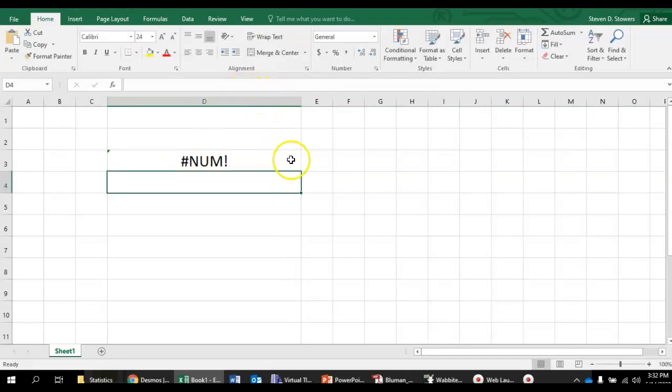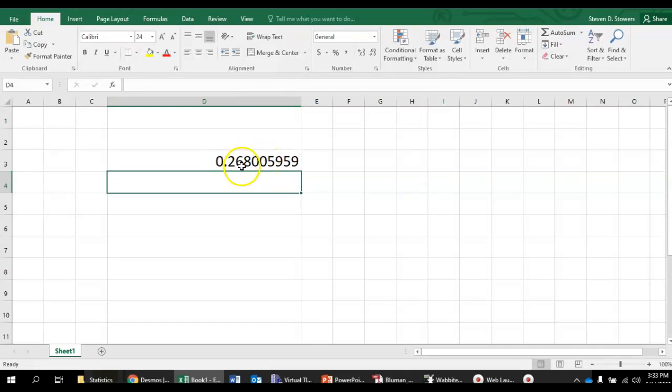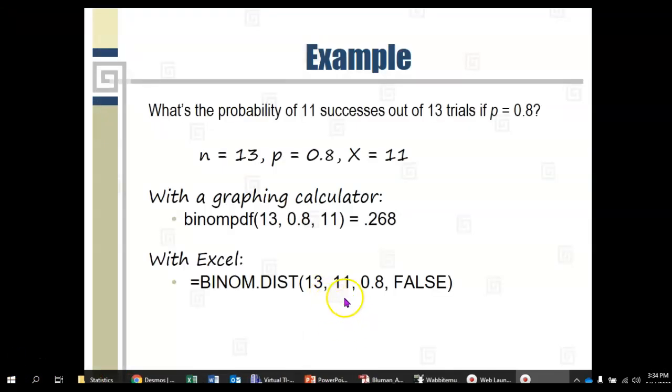hmm, what happened here? Oh, I'm sorry, I told you wrong. When you use Excel, the first number you put in is the number of successes. That was our X. And then, you put in the number of trials. That was our N. So, it would be 11, comma, 13, comma, 0.8, comma, and then the word false. And now, it works, and it shows up as 0.268. So, what's showing on the slide here is wrong. It should be 11, comma, 13, comma, 0.8, comma, false for Excel.